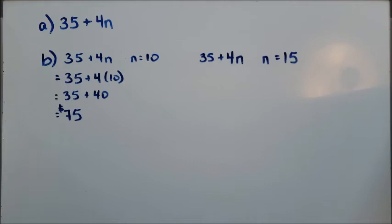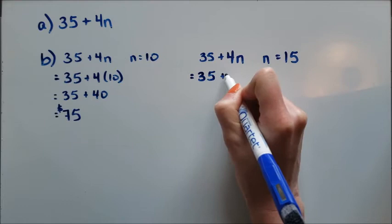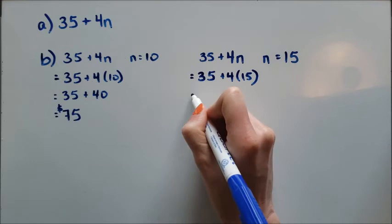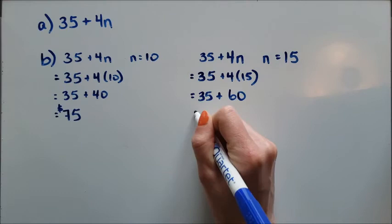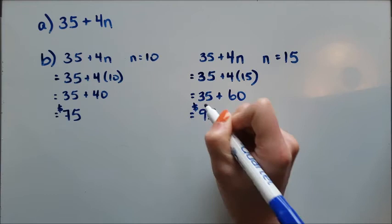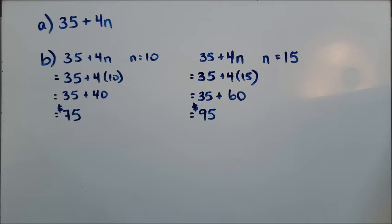For 15 people, I'm going to do the same thing, except instead of putting 10 in, we're going to put 15. I'm not going to do anything with this 35. I have to follow those BEDMAS rules. 4 times 15 is 60. 35 plus 60 is 95. If 15 people show up, then it will cost me $95.